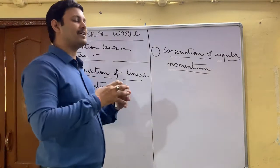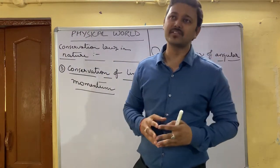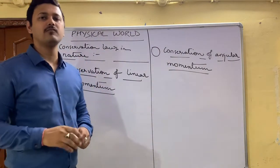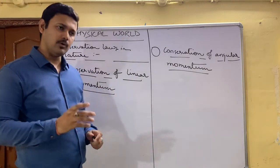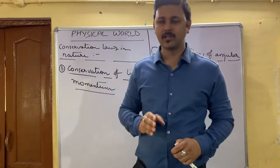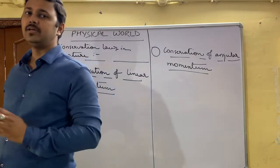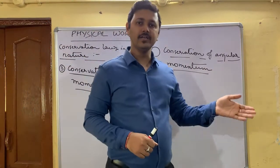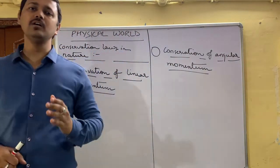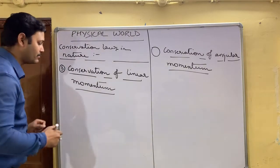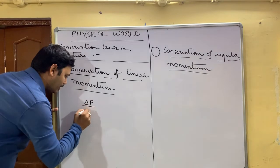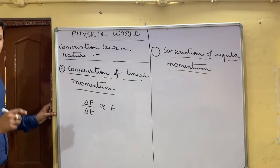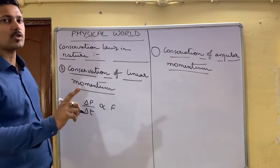The conservation of linear momentum has already been discussed in class 9, where you studied force. Newton's second law of motion states that the rate of change of linear momentum is directly proportional to the force applied, and the motion of the body will take place in the direction of the force applied. The rate of change of momentum is given by delta P upon delta T.